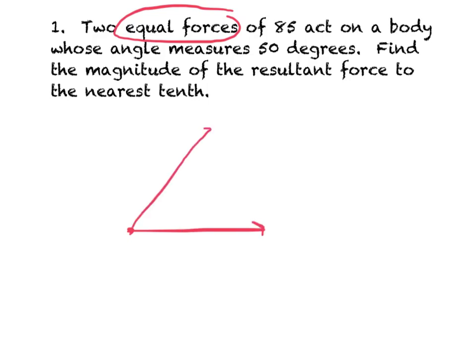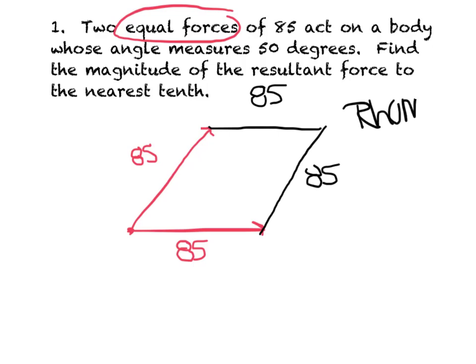And those look pretty close to being the same length. And I'm going to go ahead and label those with 85. So what I'm trying to tell you without coming out and saying it, is if your two forces are equal, and you know opposite sides are equal, you've got yourself a rhombus. So that's also telling me this side is 85 and this side is 85. So we've got ourselves a rhombus. So all those properties we just talked about hold true here.